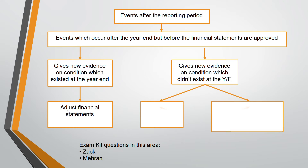Non-adjusting events give new evidence on a condition which did not exist at the year-end. You come across new information or new evidence after the year-end, but at the year-end there were no such conditions. That new evidence is known as a non-adjusting event.